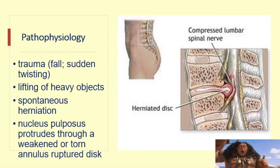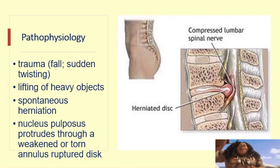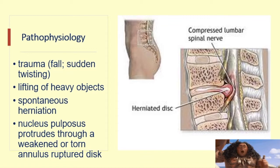Regarding pathophysiology, it may be related to trauma such as a fall, sudden twisting, or lifting of heavy objects. For healthcare professionals such as nurses, that would be lifting patients without the aid of assistive or lifting devices. There could also be a condition referred to as spontaneous herniation, which happens when the nucleus pulposus protrudes through a weakened or torn annulus. Whenever there is a weakness of the annulus, the tendency of the pulposus is to go out through that weakening.